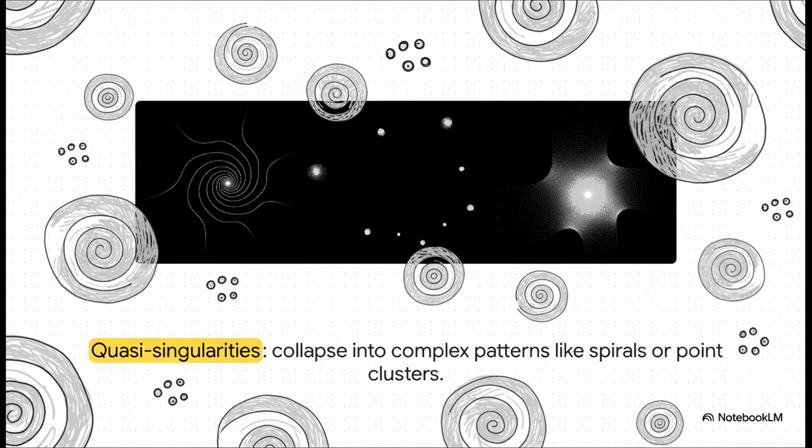But this is where the M-set model offers a really fascinating twist. See, unlike the single, simple point of a black hole's singularity, the quasi-singularities in the M-set can be incredibly complex. As you can see from these examples, a starting point can collapse into a beautiful spiral, or even a whole cluster of nine different points.